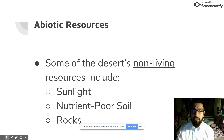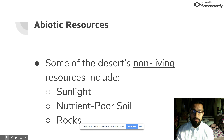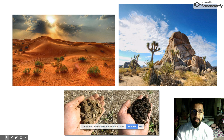Now I would like to talk about some of the abiotic resources that the desert ecosystem has. Some of the desert's non-living resources include sunlight, nutrient-poor soil, and also rocks. We have three examples of abiotic resources in the desert ecosystem.